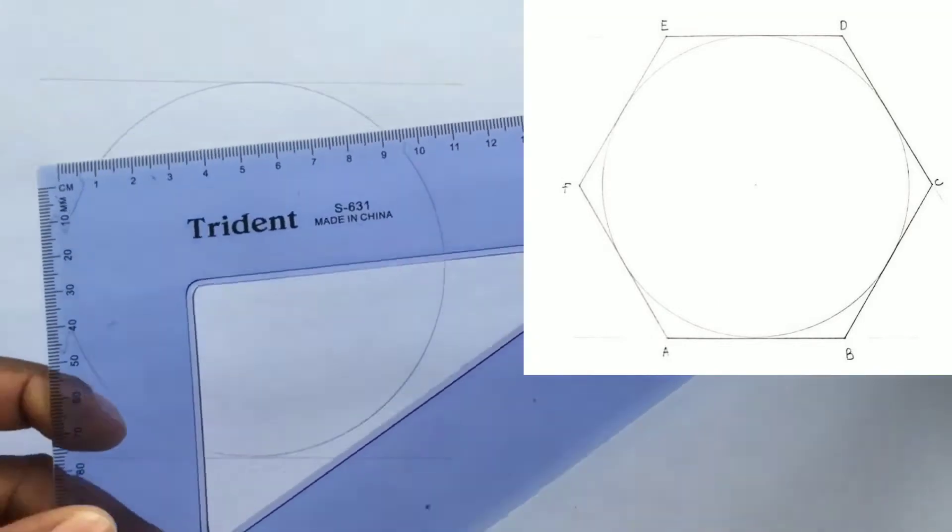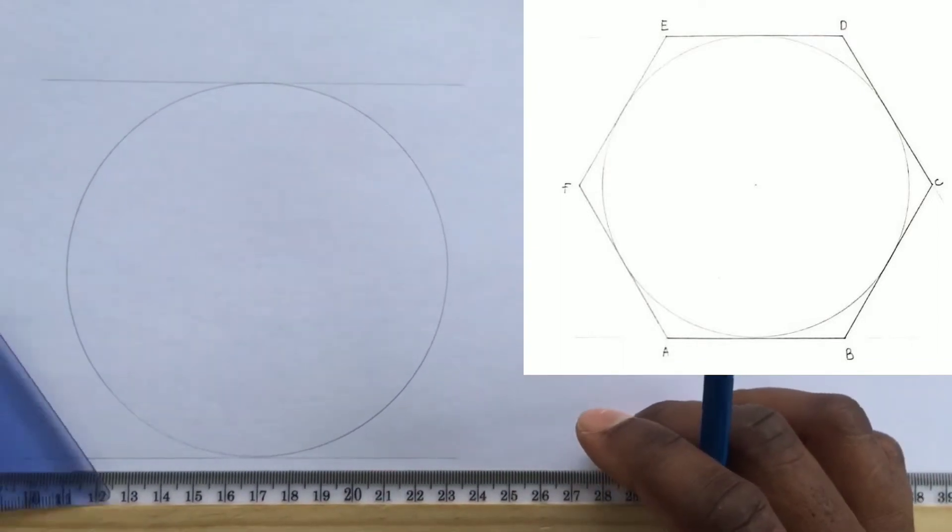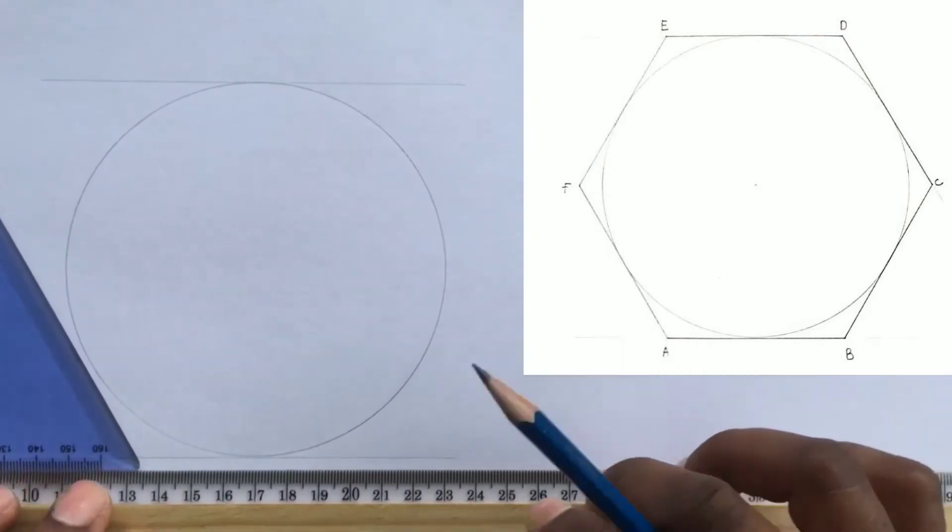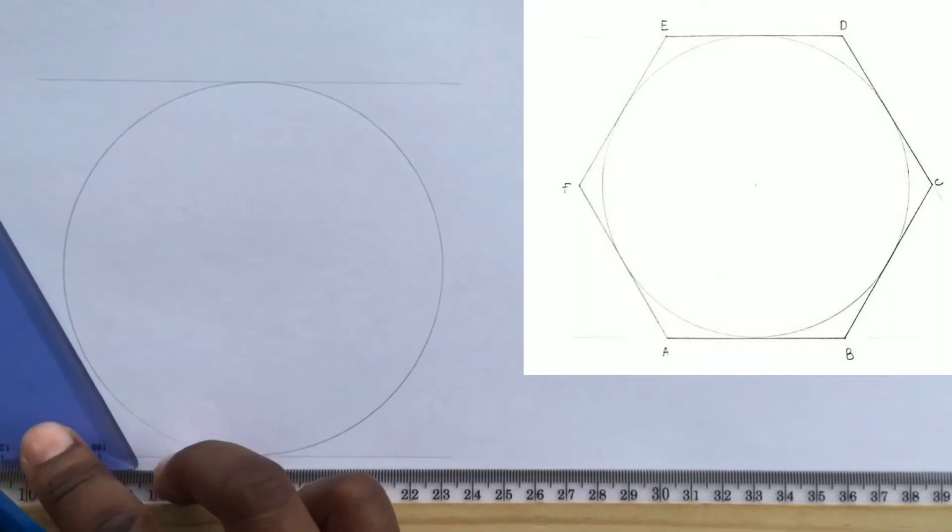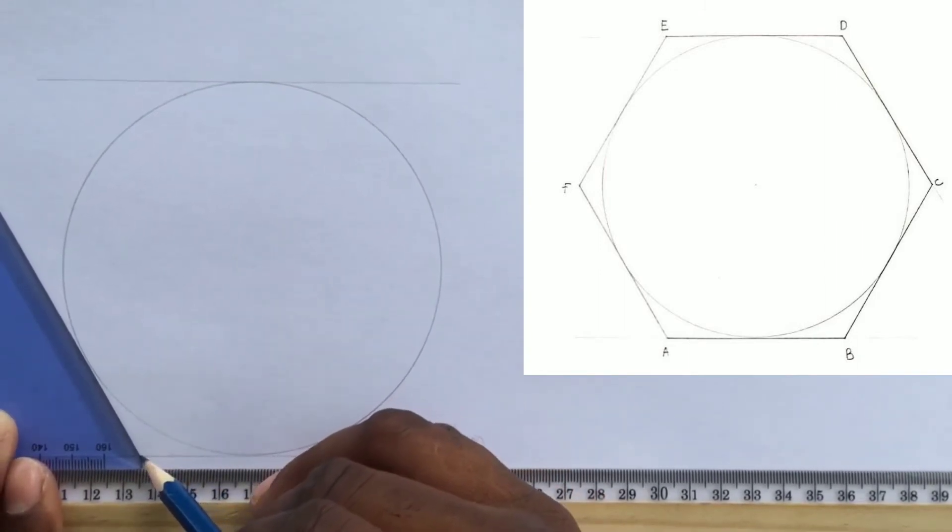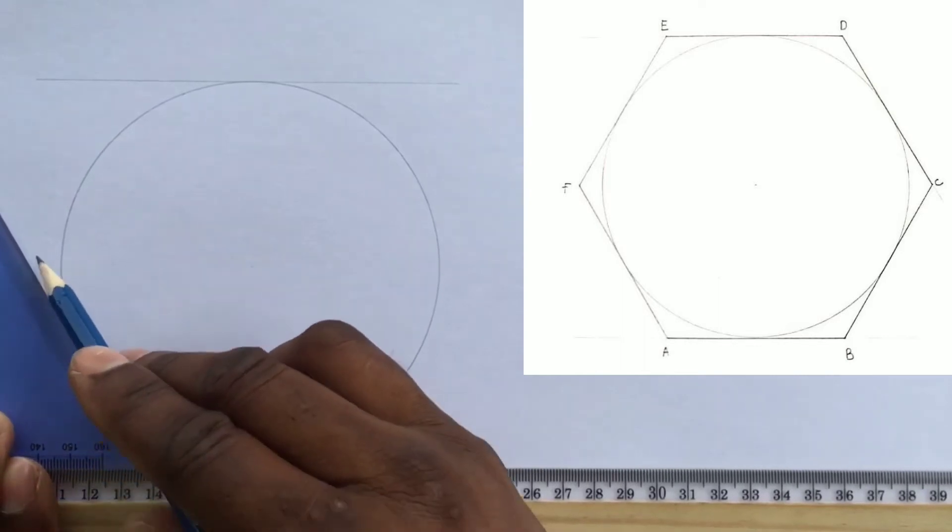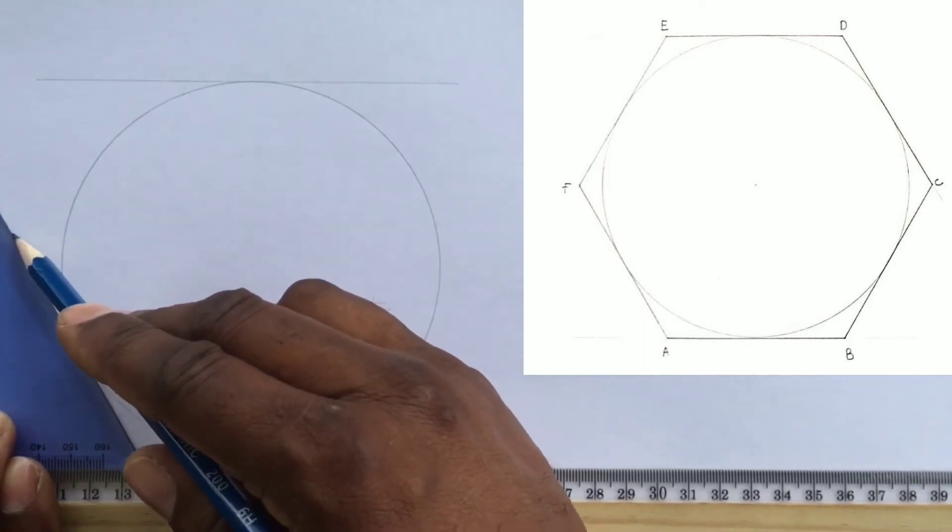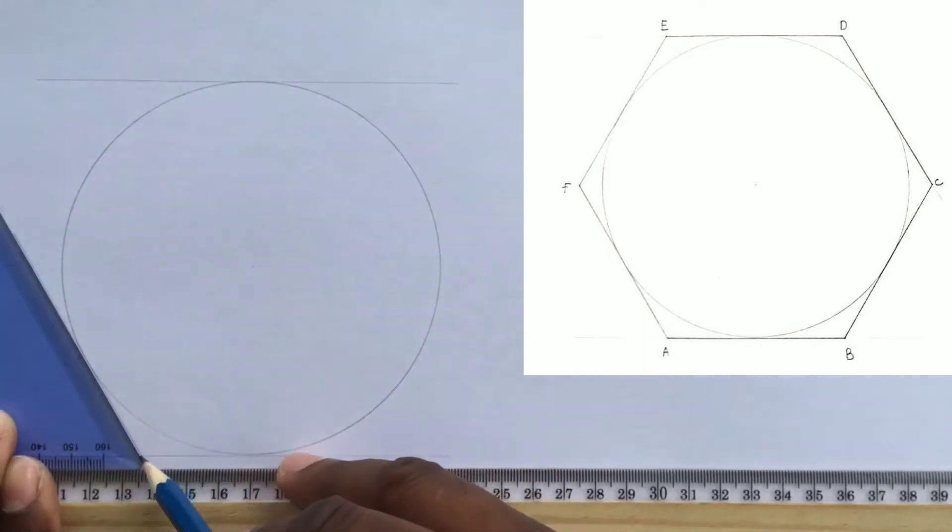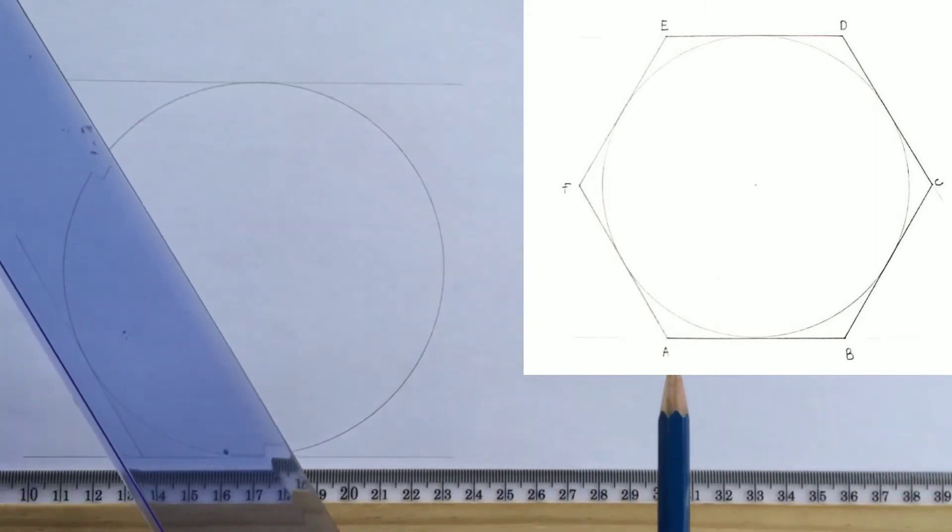We will now use our 60 degree set square to construct four tangents to our circle. Two at the left of the circle and the other two at the right of our circle. Ensure that your set square is held against your t-square and your t-square must be held firm against your drawing board or table.